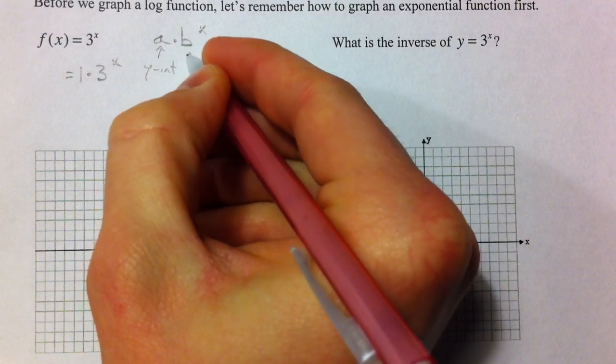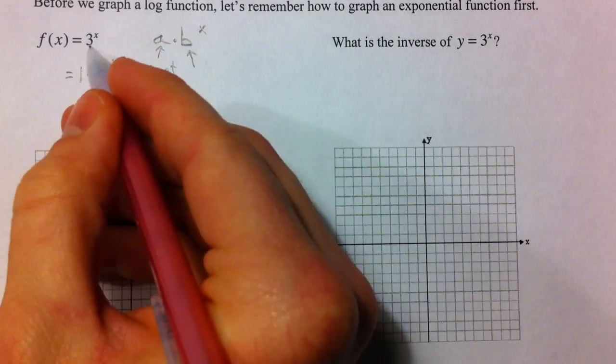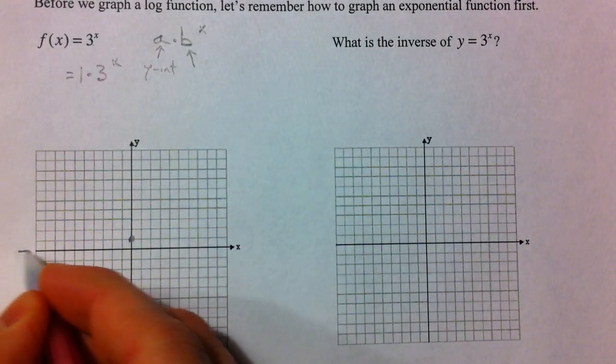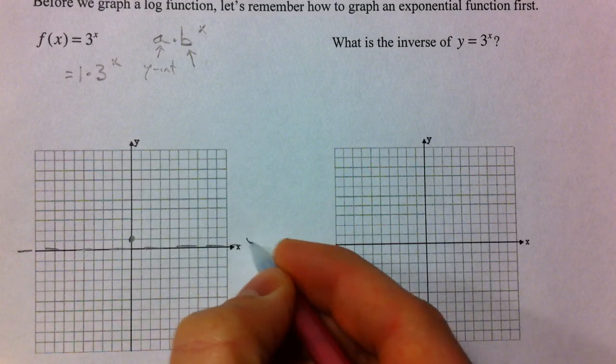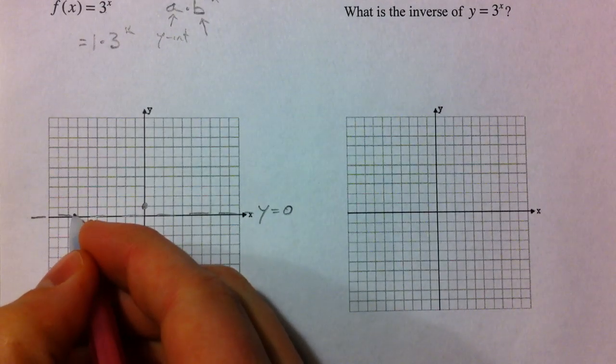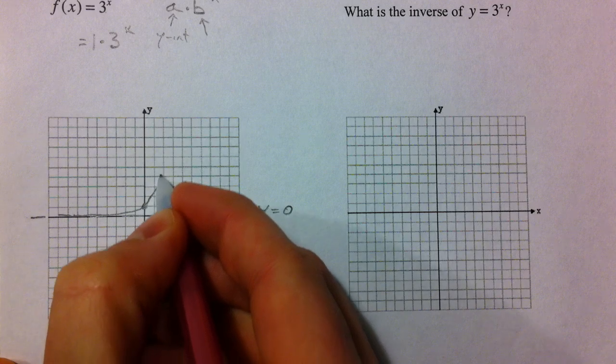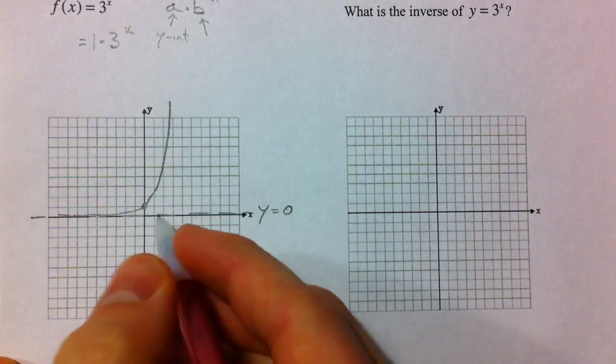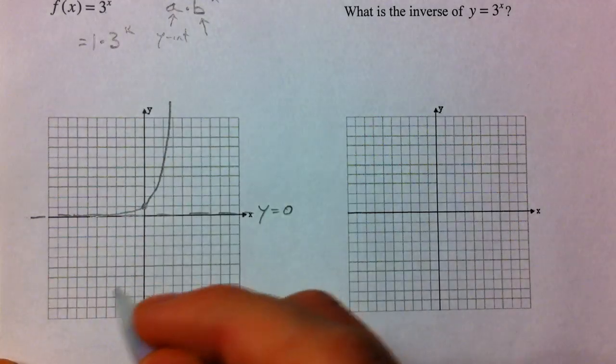And b was our common multiplier and that determined whether it was growing or decaying. In this case it's 3, so it's going to be growing. We also always had our y equals 0 as our horizontal asymptote, and so it gets really close to the horizontal asymptote and grows. Remember it was times 3, times 3, times 3, this is going up extremely fast.